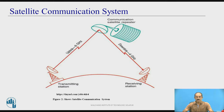The schematic shows the satellite communication system. It consists mainly of a transmitting station, a receiving station, and the satellite.